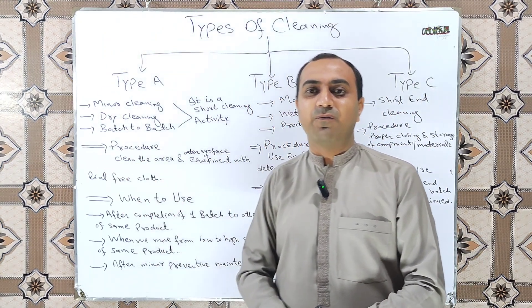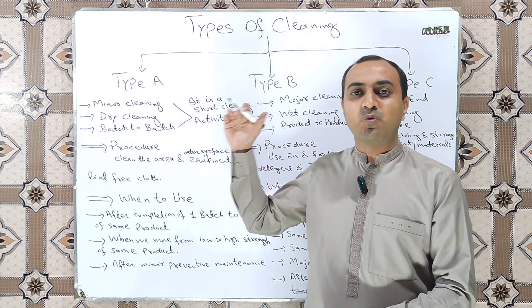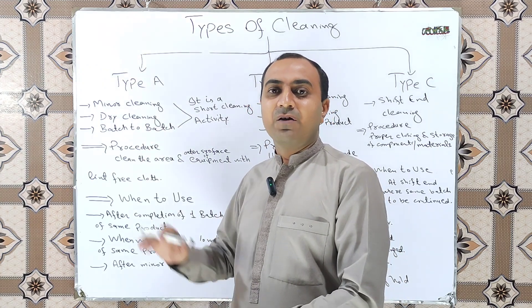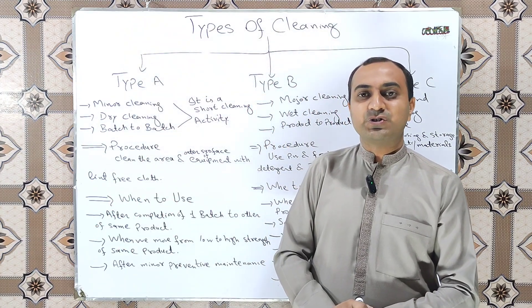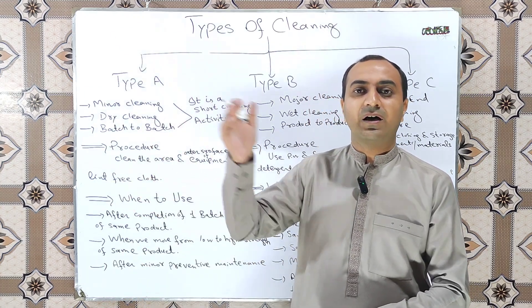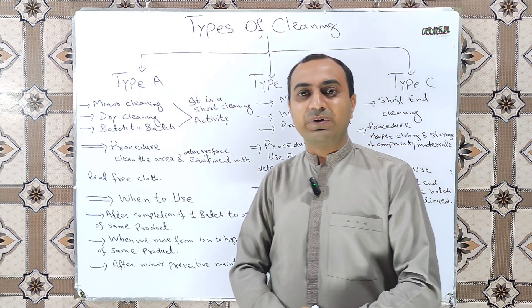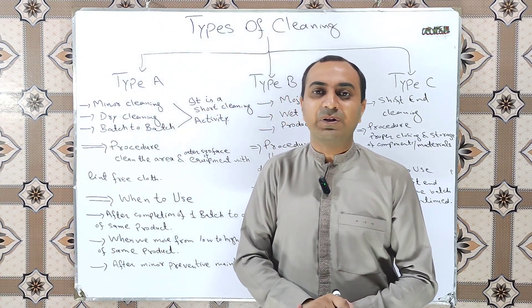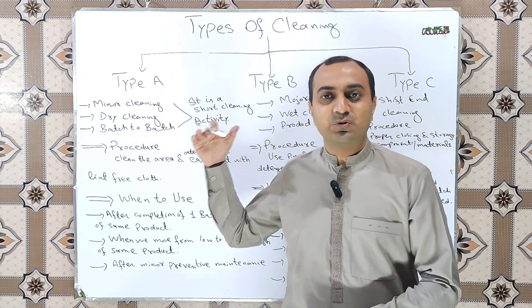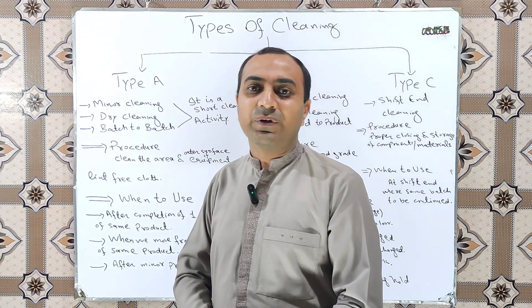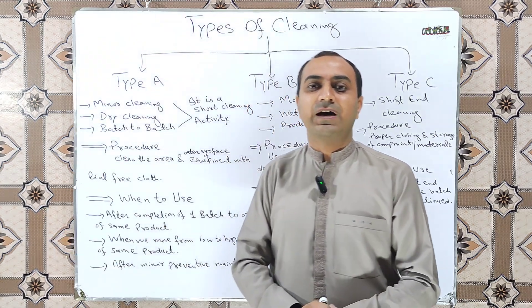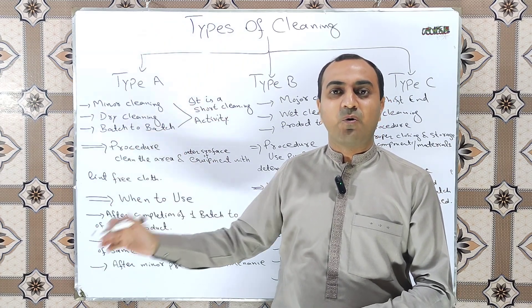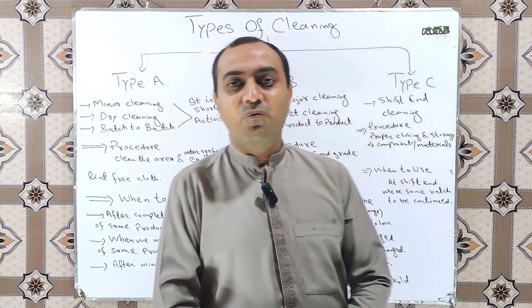We perform Type A cleaning when we move from the completion of one batch to another batch of the same product. We also perform it when we shift from lower strength to higher strength of the same product — for example, manufacturing 20 mg after manufacturing 10 mg of the same product. Type A cleaning is also performed after minor preventive work where equipment parts are not involved.